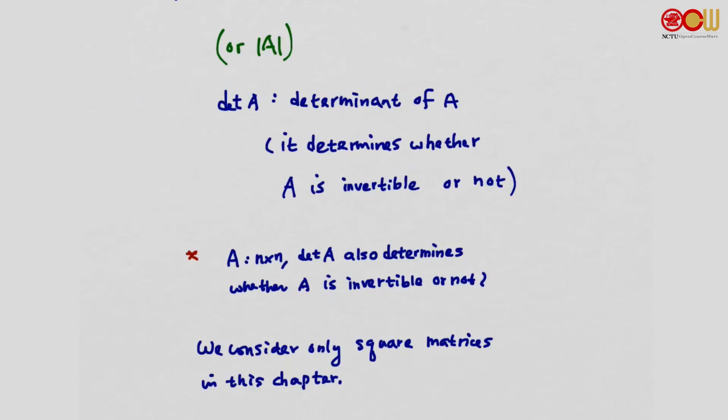In this chapter, we are going to consider n by n matrices A and see whether a determinant of A also determines whether A is invertible, like the 2×2 case. In this chapter, we will consider only square matrices.